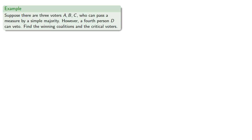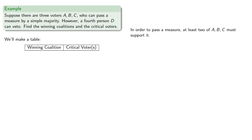Let's find the winning coalitions and the critical voters. We'll make a table. In order to pass a measure, at least two of A, B, and C must support it. Since D can veto it, D must also support it.